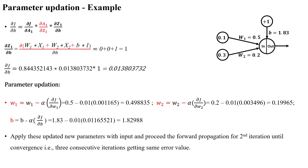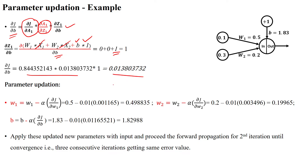Likewise, we calculate ∂J/∂B. Using the same chain rule: ∂J/∂A1 and ∂A1/∂G1 are already calculated. For ∂G1/∂B, differentiating with respect to B: the W1·X1 and W2·X2 terms become 0, and B becomes 1. Substituting the values, we get ∂J/∂B = 0.013.